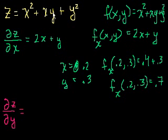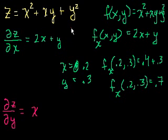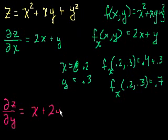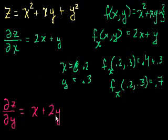Now, this xy term — the way we're viewing it now is y is the variable, x is the constant. What is the derivative of, say, 5y with respect to y? Well, it's 5, so the derivative of xy with respect to y is just x. And what's the derivative of y squared with respect to y? Well, it's just 2y. So as you can see, it's quite symmetric: the partial of z with respect to x is 2x plus y, and the partial of z with respect to y is x plus 2y. That's because this equation is pretty symmetric — the x's and the y's kind of do the same thing.